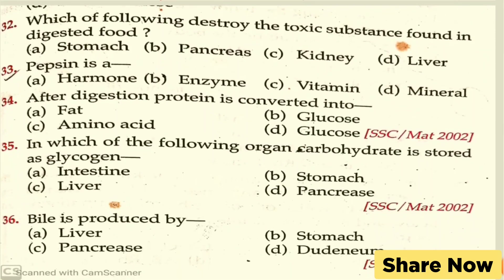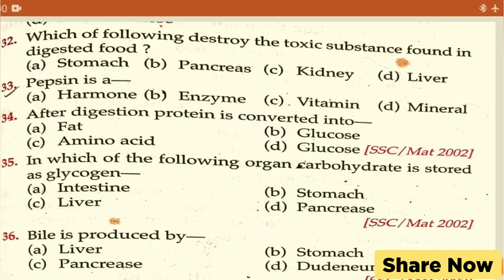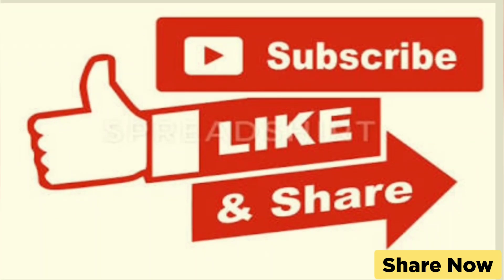Question: which of the following destroys toxic substances found in digestive water? Pepsin is the right answer. After digestion, protein is converted into amino acids, and carbohydrates into fatty acids and glycerol. Carbohydrates are stored as glycogen in the body.